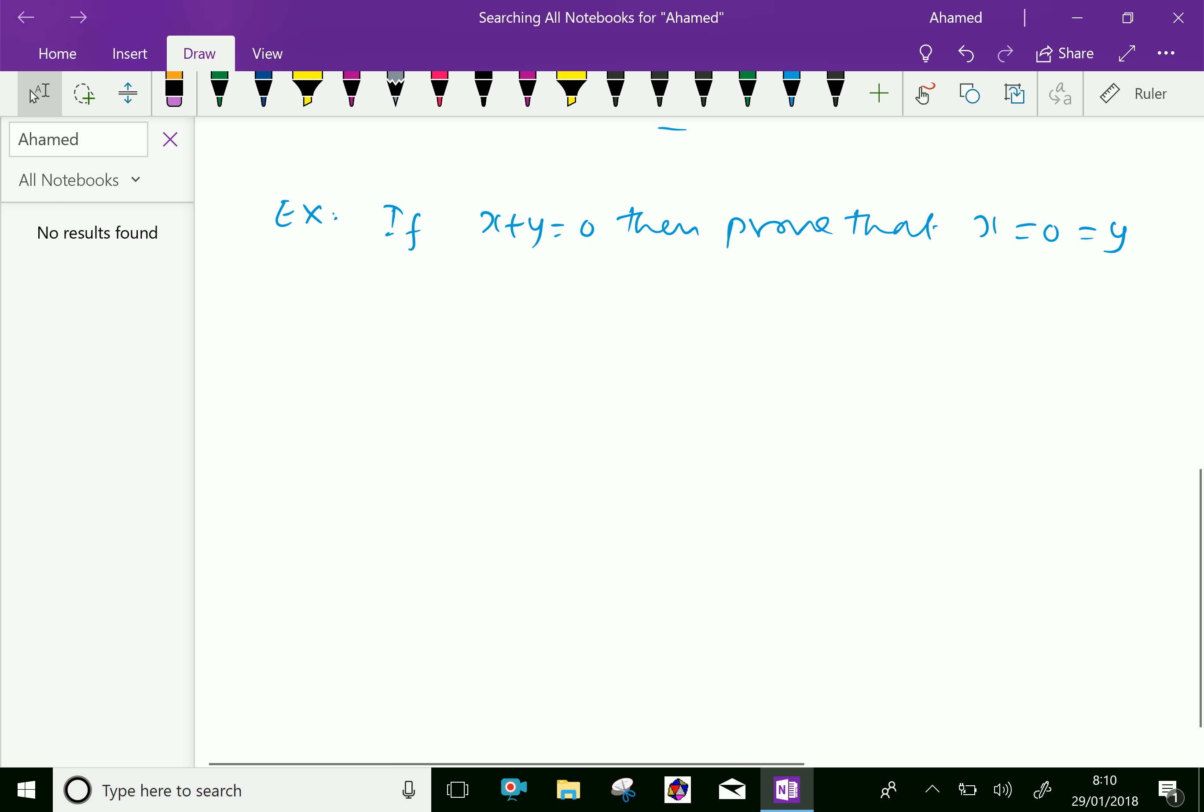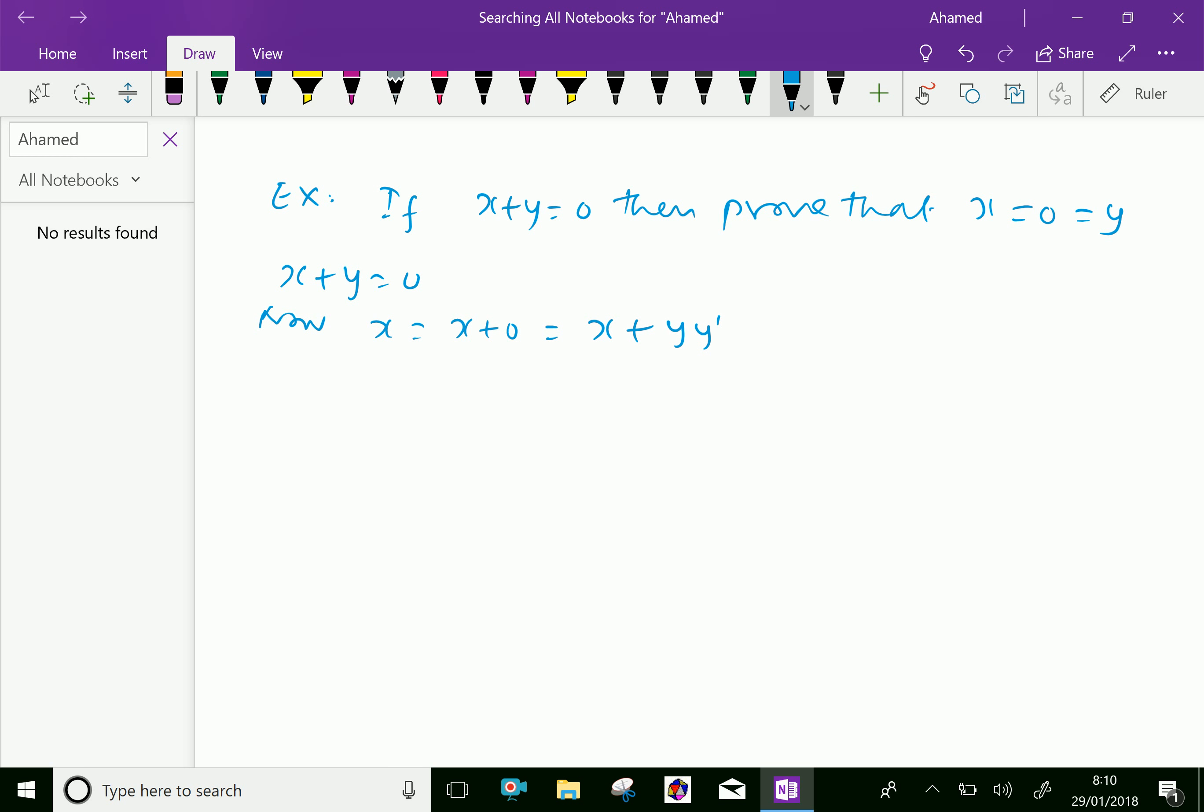Now, we will do the solution. Now, x + y = 0 is given. Now, x = x + 0, which is equal to x. Instead of 0, we can write y·y'.